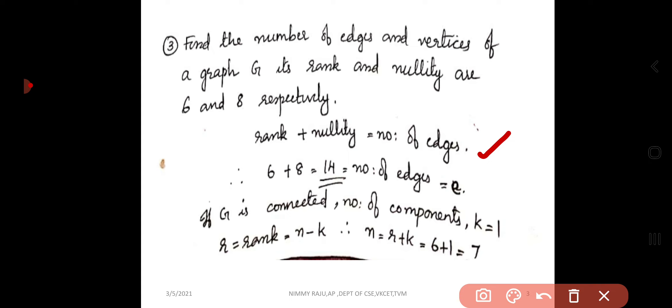So rank plus nullity equal to number of edges. We have rank equal to 6 and nullity equal to 8. So number of edges E equal to 6 plus 8 equal to 14.